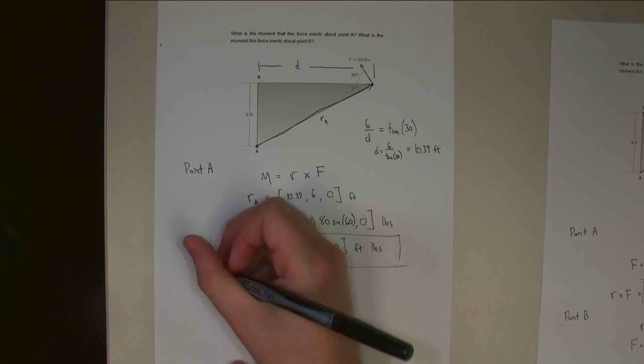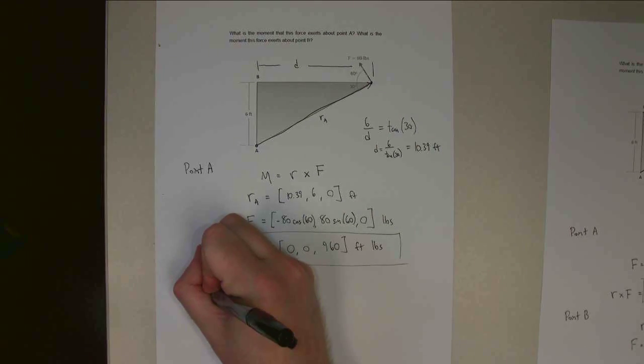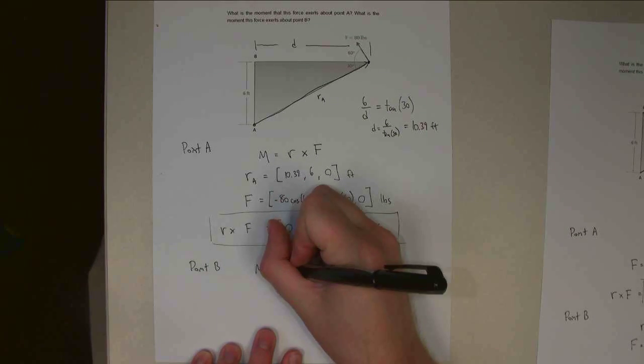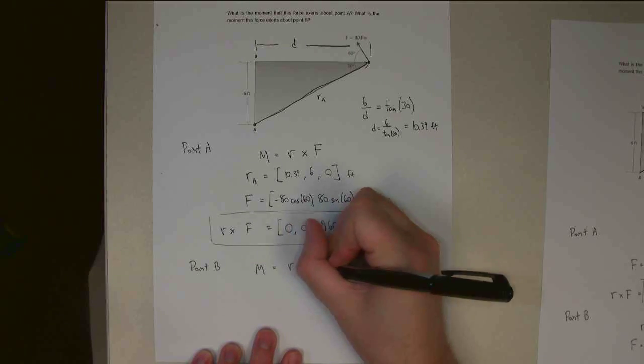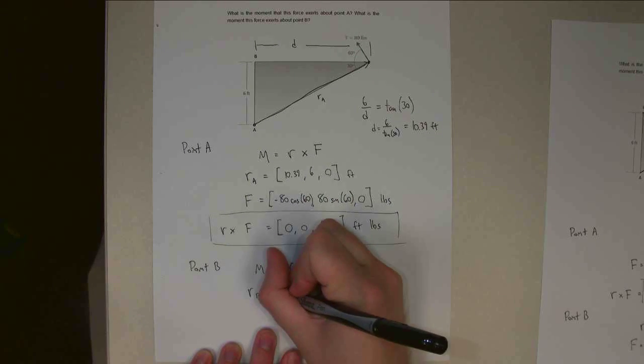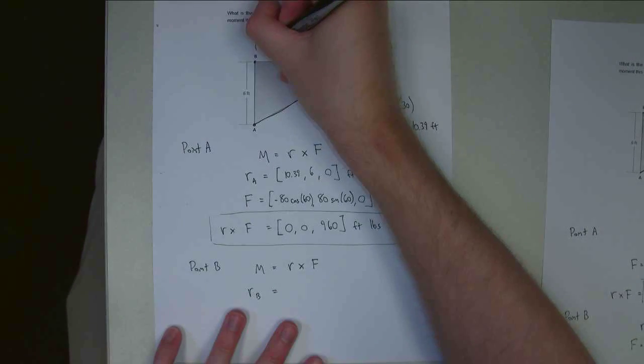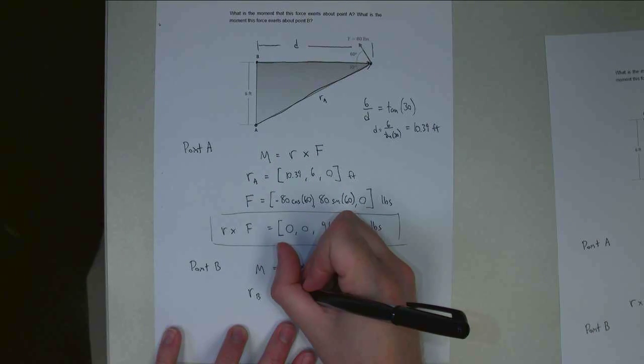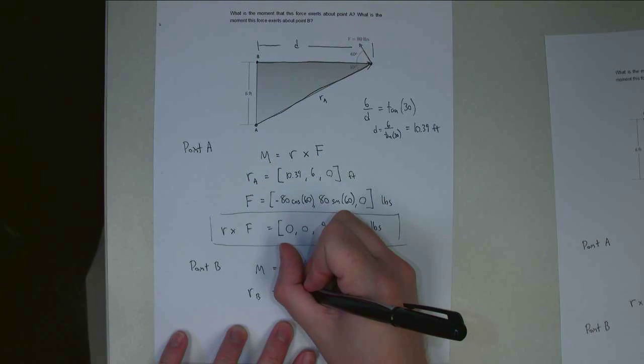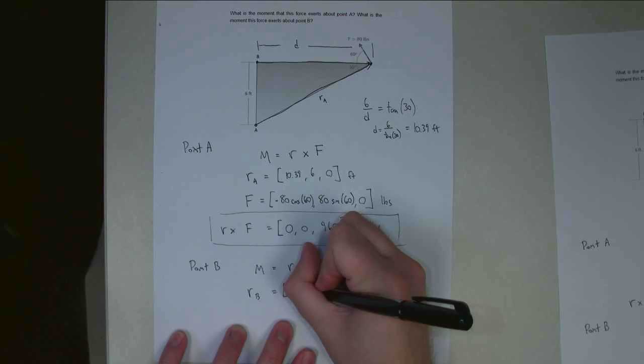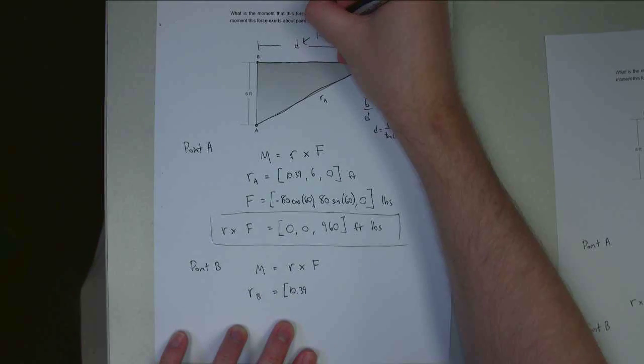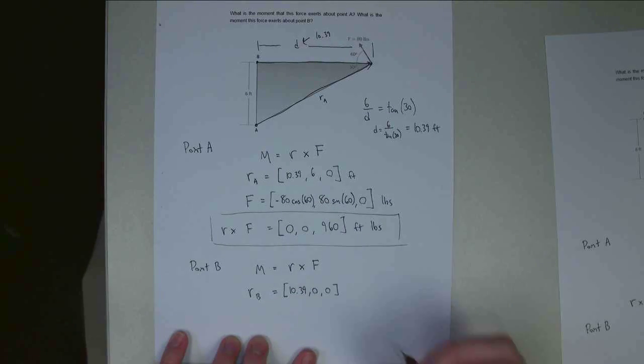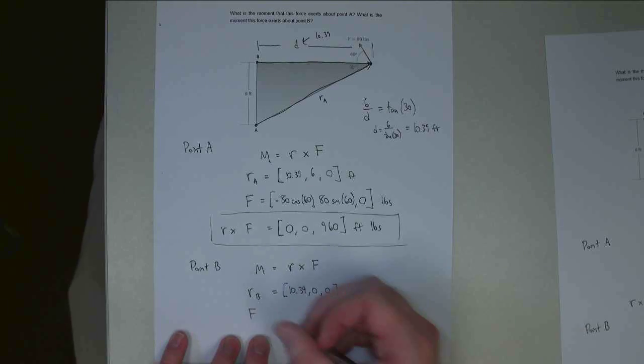Next let's go to point B. And we're still going to be using vector operations. So I know that the moment is equal to R cross F. R sub B is going to be different. So now I'm going from point B over to where the force is exerted. And so this time it's going to be still 10.39, and this is D is 10.39, comma 0 in the Y direction, comma 0 in the Z direction. The force vector doesn't change. It's the same one I had before.